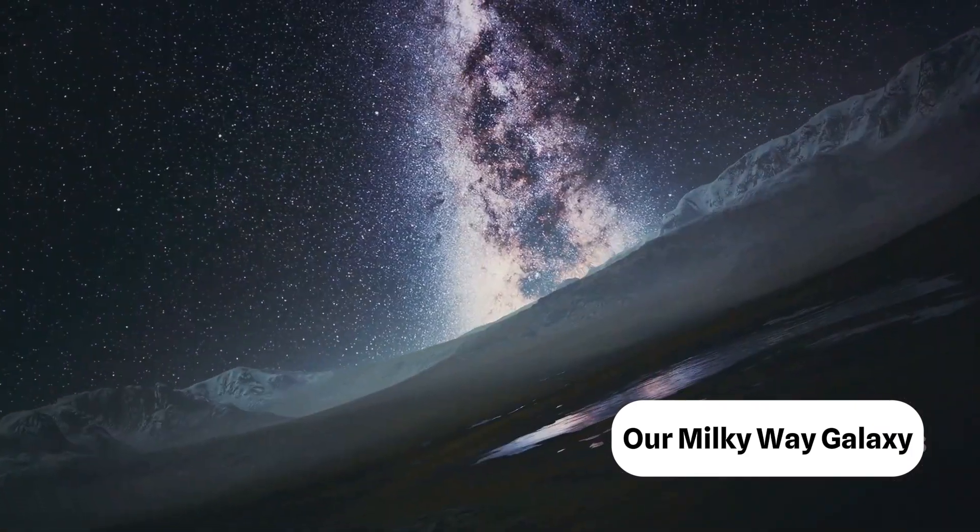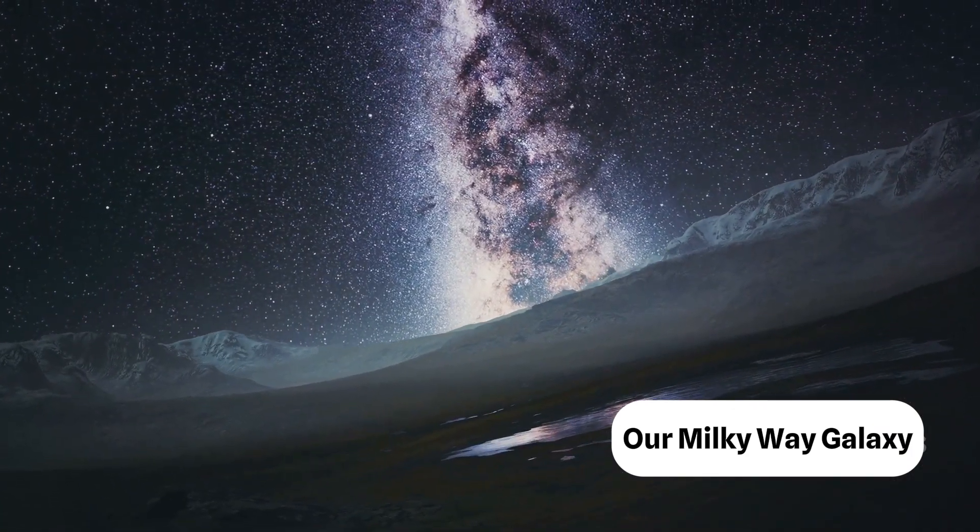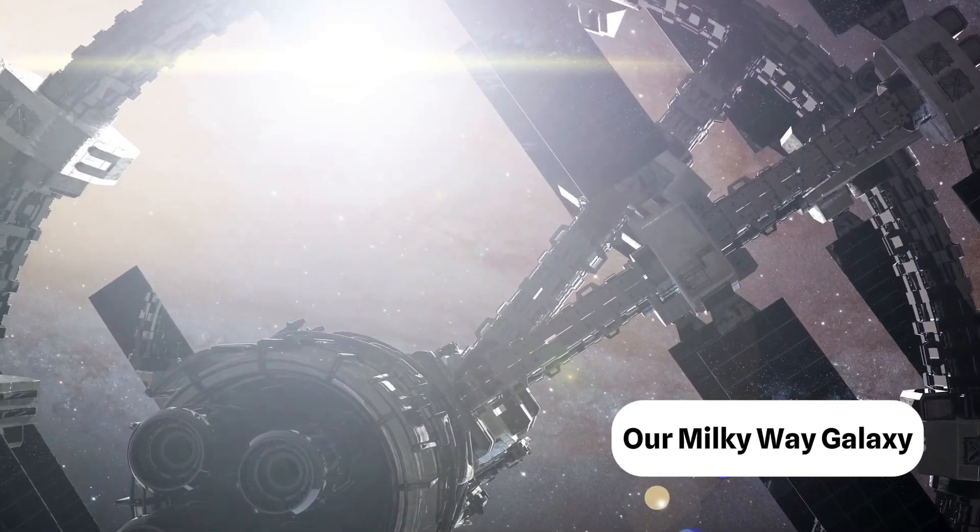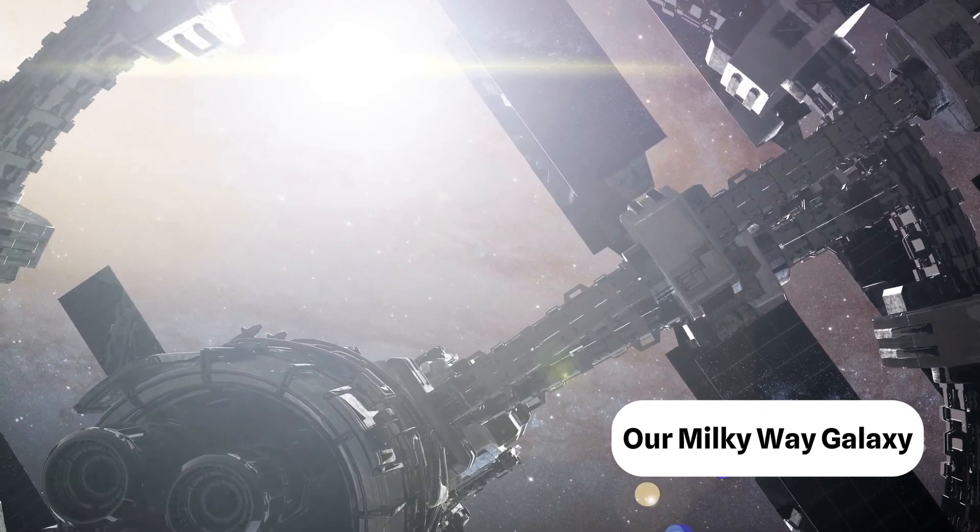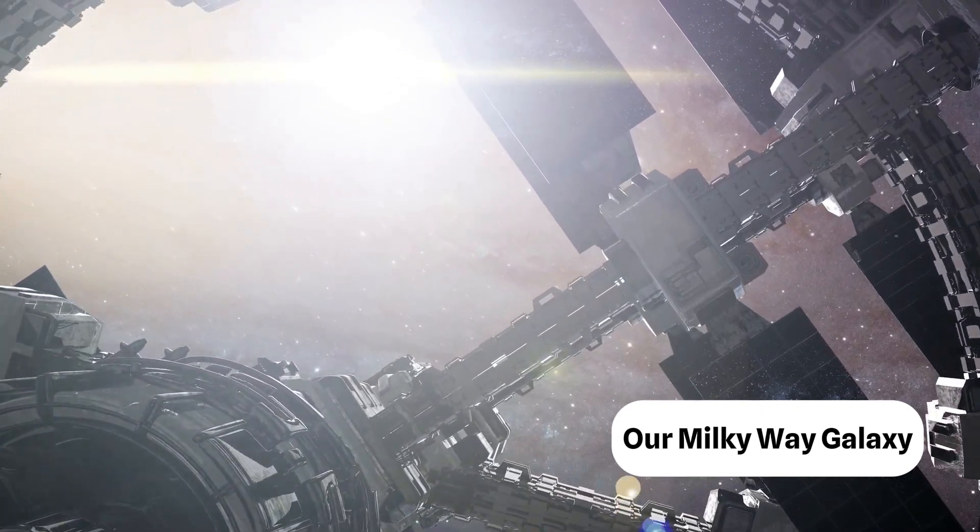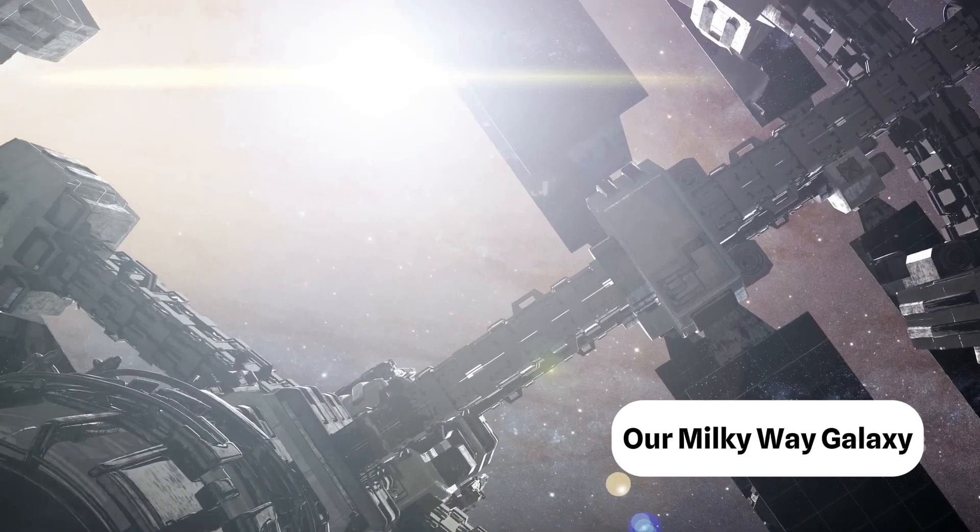The Orion arm, named after the constellation Orion, is a minor spiral arm sandwiched between two major ones, the Sagittarius and Perseus arms. It stretches across 10,000 light-years of space and is home to our sun and of course our beautiful blue planet, Earth.